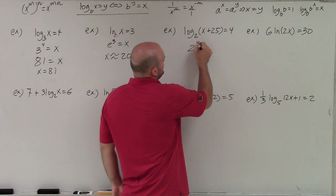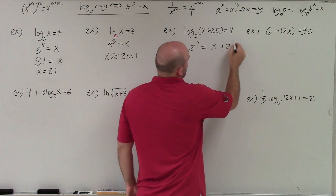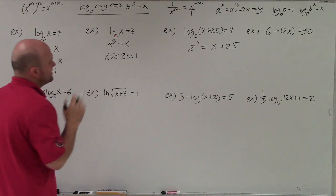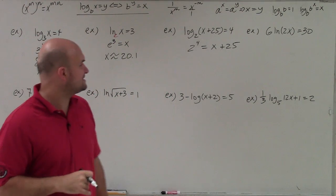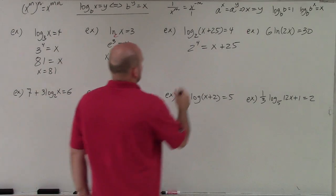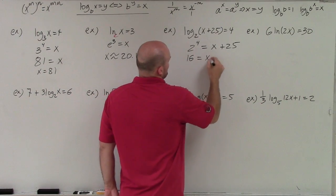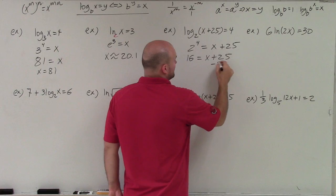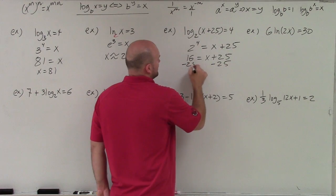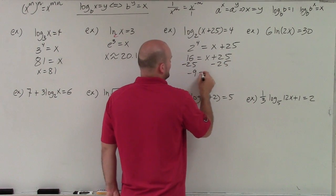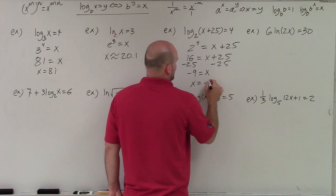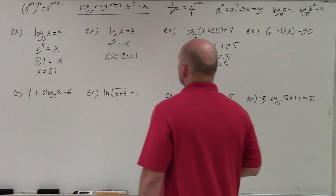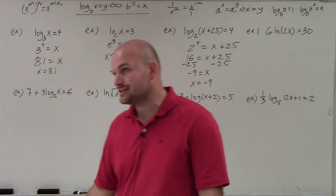By rewriting this, I have 2 to the fourth equals x plus 25. When I take 2 to the fourth power, I get 16 equals x plus 25. Then I just solve for x — subtract 25 on both sides — and I get negative 9 equals x, so x equals negative 9.